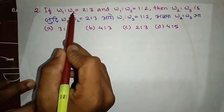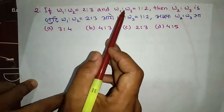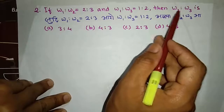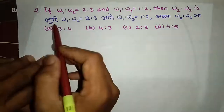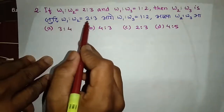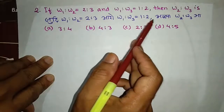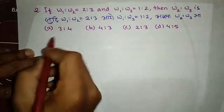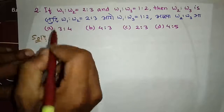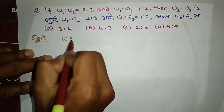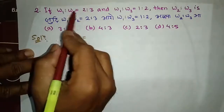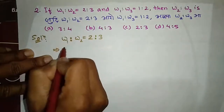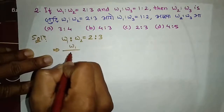If W1 is to W2 is 2 to 3, and W1 is to W3 is 1 to 2, then W2 is to W3 is — we can see that W1 to W2 is 2 to 3, and W1 to W3 is 1 to 2. So W2 to W3 equals — W1 to W2 to W3 is 2 to 3. The solution: W1 to W3 gives us W2 to W3.